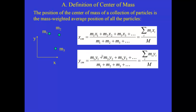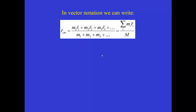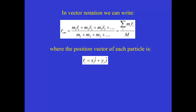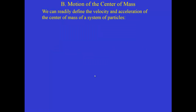We can do the same thing analogously for the y-coordinate of the center of mass, and if particles had different z-coordinates, we could do the same for the z-axis. In vector notation, instead of writing separate equations for each coordinate, we write the vector position of each object as r1, r2, and r3, giving us the sum over all particles of mass times particle position divided by the total mass. Each particle has a position given by the vector r sub i, which is x sub i i-hat plus y sub i j-hat.